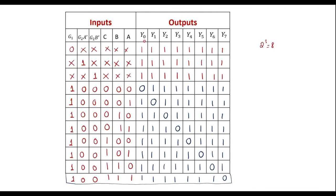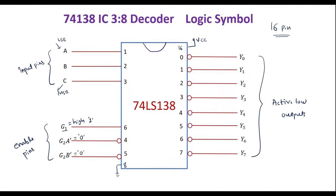Now let me write the output equations according to this truth table. For Y0, the output is active-low. Comparing with the previous 3-to-8 decoder where outputs were active-high, for input 000 the equation was C̄B̄Ā. Since Y0 is active-low, we take the complement: Y0 = (C̄B̄Ā)̄. For Y1 with inputs 001, we get Y1 = (C̄B̄A)̄.